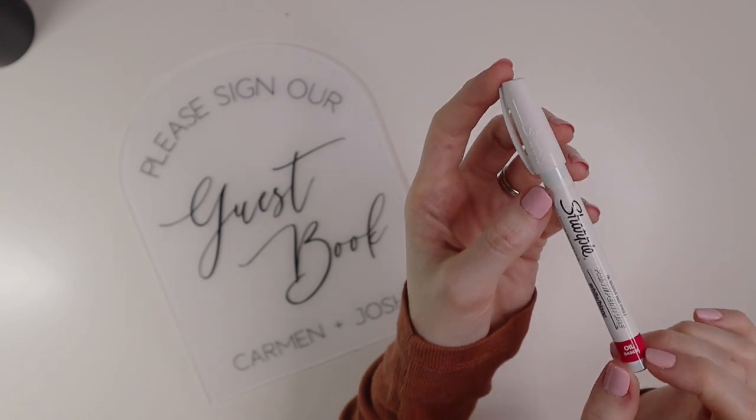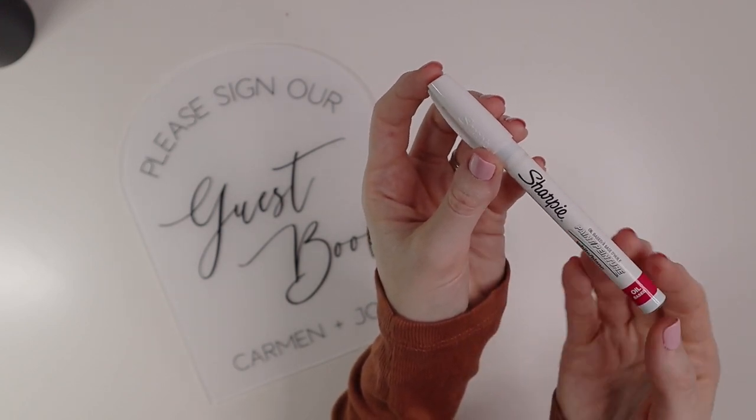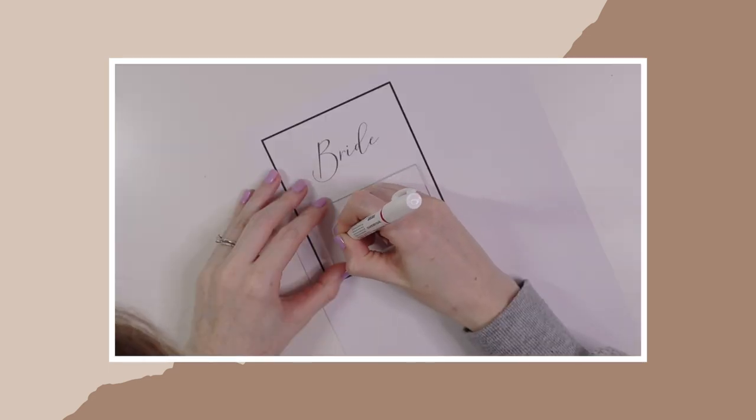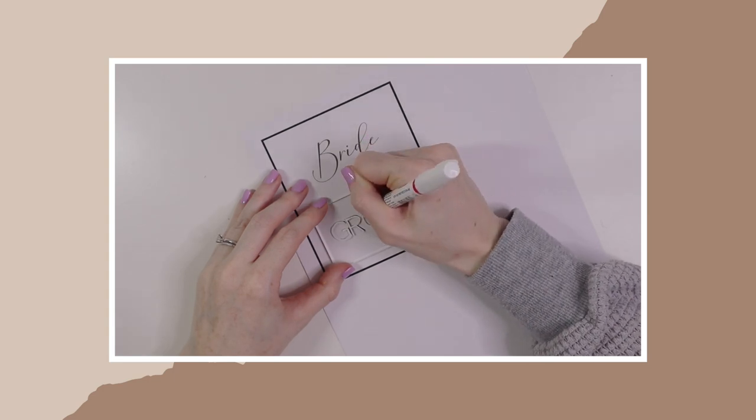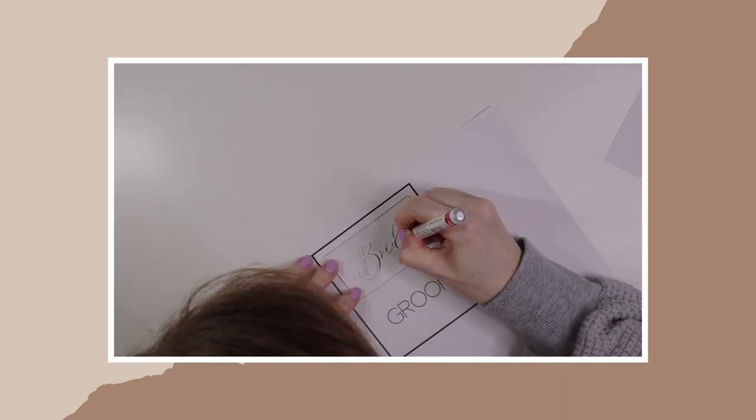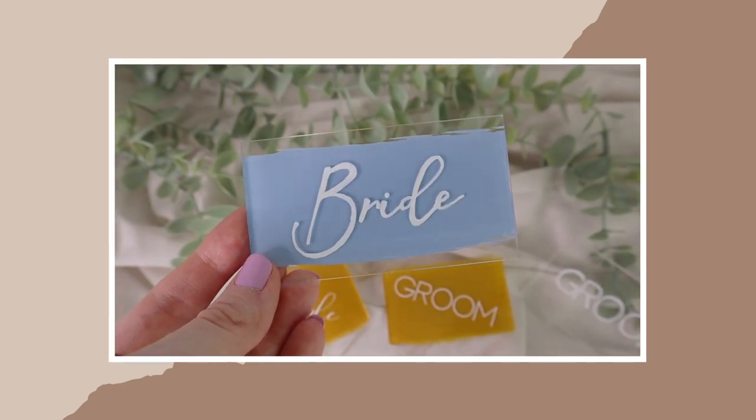You can get a very similar look without using a Cricut and just using a Sharpie oil-based pen. I did an in-depth step-by-step tutorial on how to hand letter on acrylic. If you want to check that video out, I will link it down below for you guys and in the cards. But if you don't have a Cricut and you are looking to do some wedding DIYs, this is a really easy way to do them.